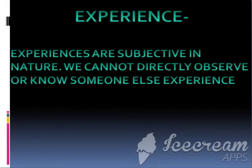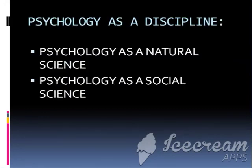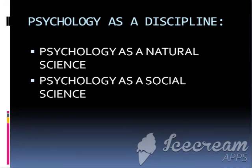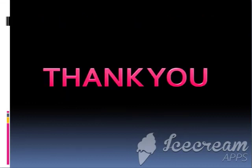This is the definition of psychology. Next is psychology as a discipline. This includes two terms: psychology as a natural science, and psychology as a social science. Next time, we will discuss this topic — psychology as a discipline — in detail. Thank you.